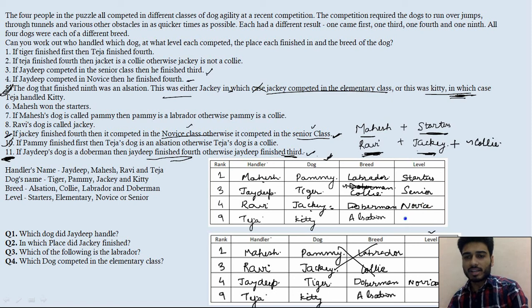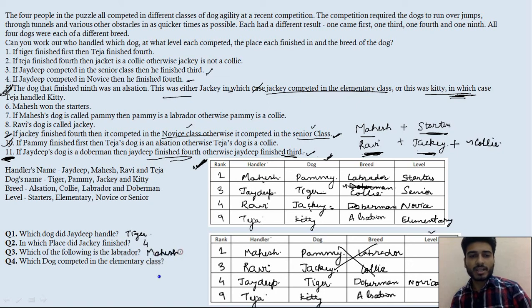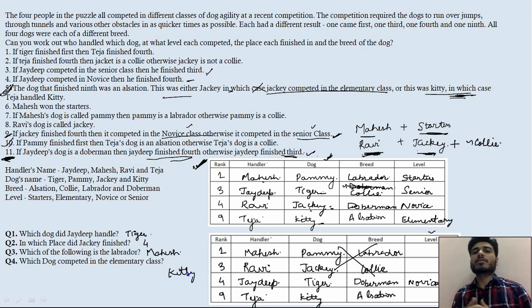The only level left is elementary, which goes to the remaining slot. Now we can answer the questions. Which dog did Jadeep handle? Tiger. In which place did Jackie finish? Fourth. Which of the following is the Labrador? Mahesh's dog, Pammy. Which dog competed in the elementary class? Kitty. That's it for this set — I hope you learned something new. For more such videos, like, share, and subscribe. Thanks and happy learning!